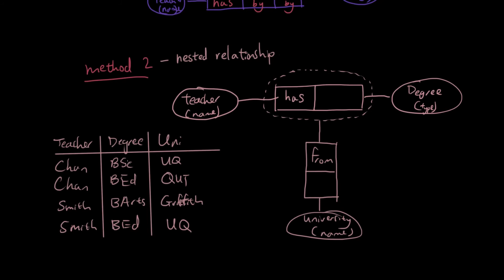So what you can see is that if you look at each column individually, there are repeats. Chan has repeated in the same column. Bachelor of Education has repeated in this second column.